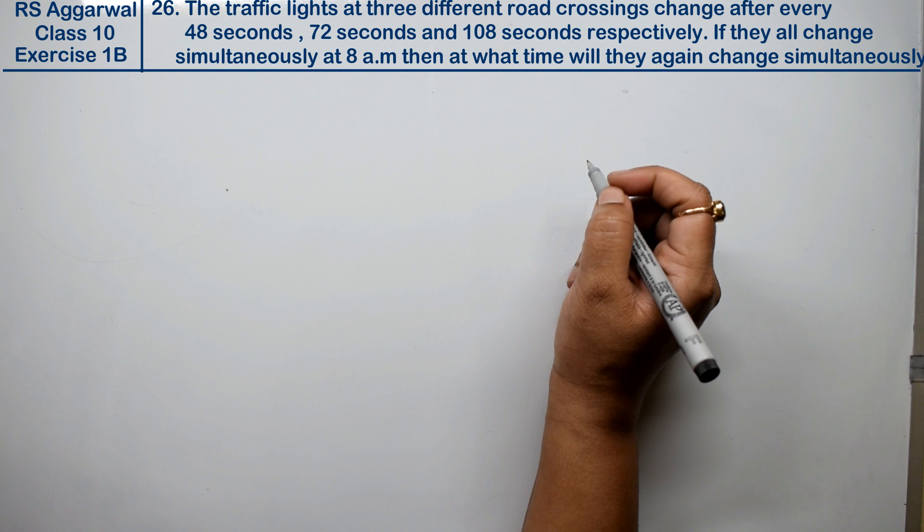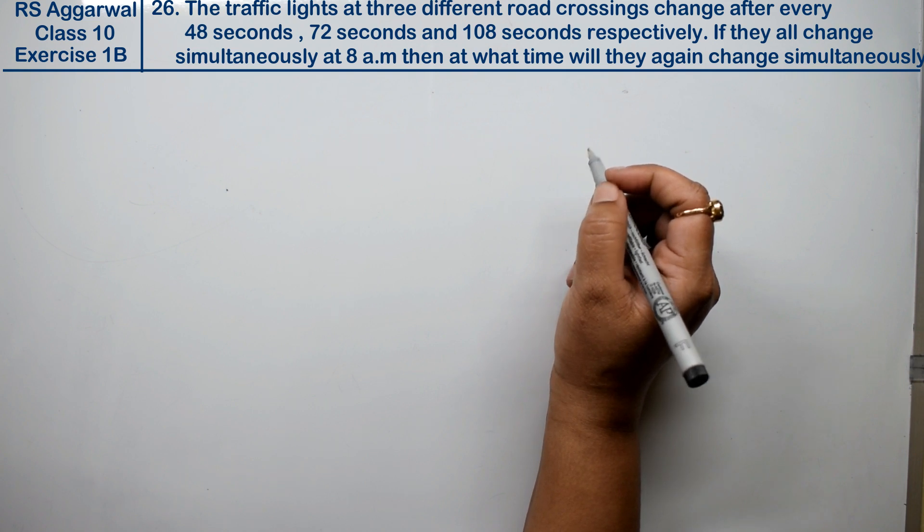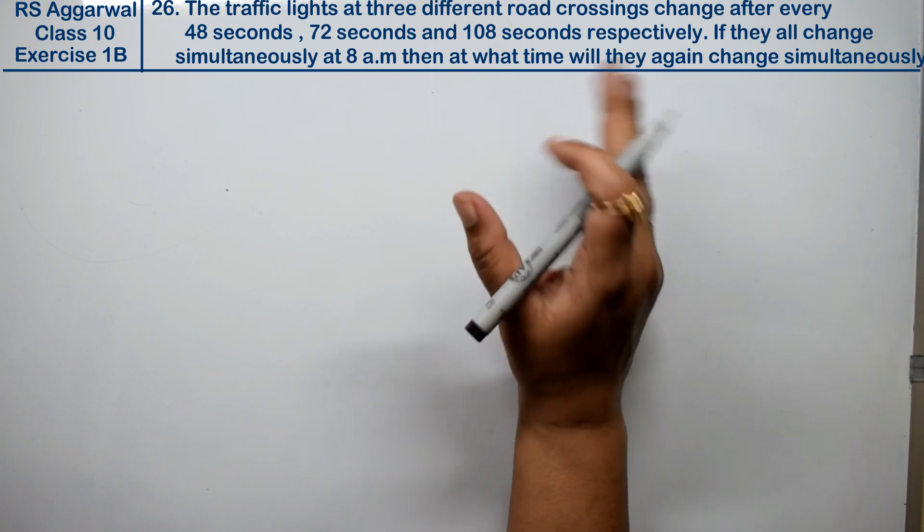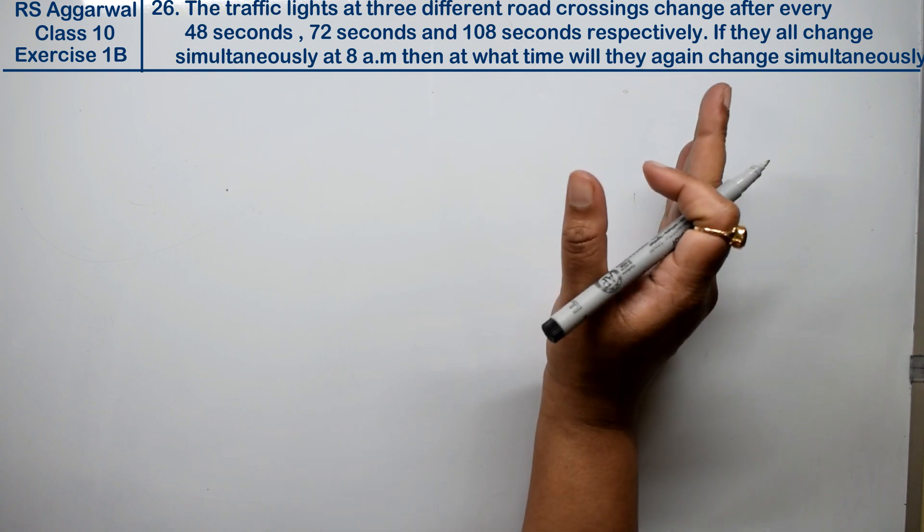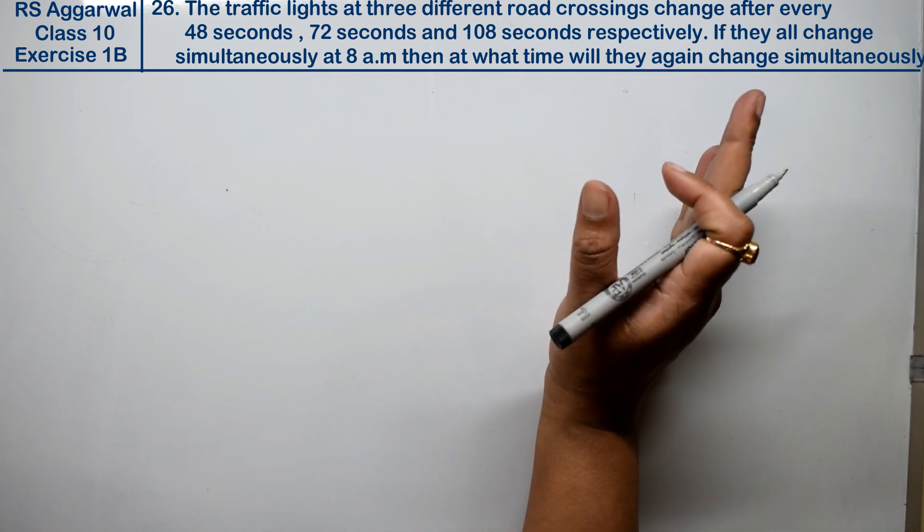Let's do question number 26 of exercise 1B, that is real numbers. The question is about traffic lights at three different road crossings that change after every interval.